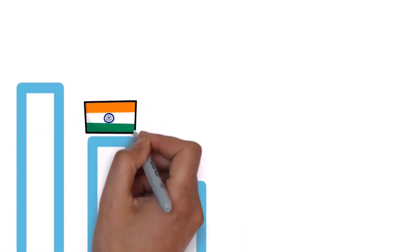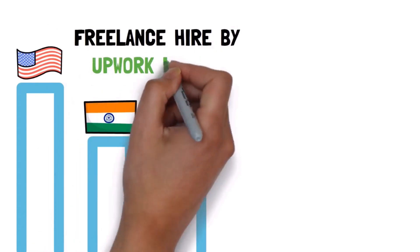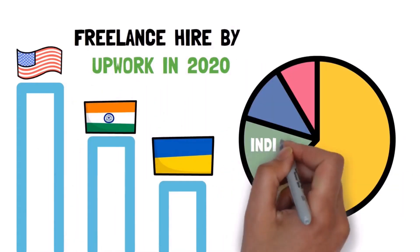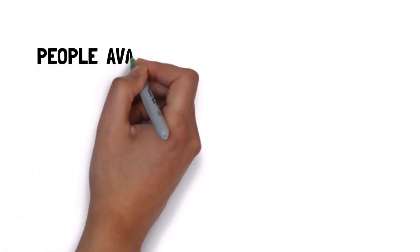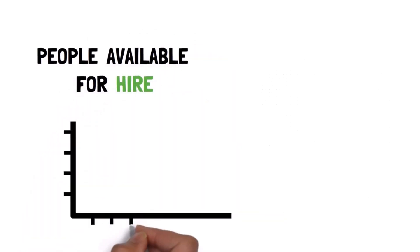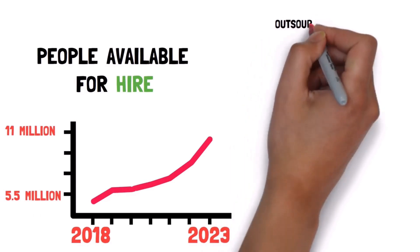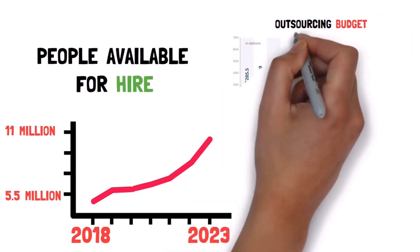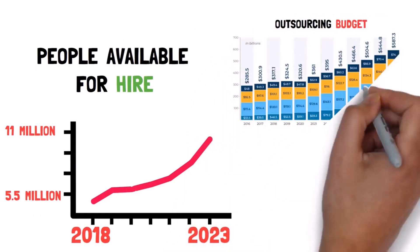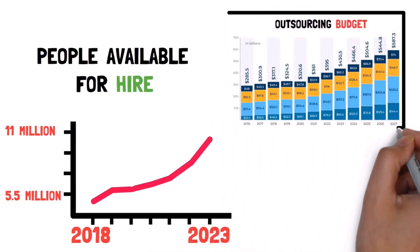Now, India was also voted as the second biggest market for freelance hire by Upwork in 2020, having 12.6% of the market share. Now, the amount of people that are available for hire is estimated to double to more than 11 million people, and that's because the budget for outsourcing is going to go from $180 billion a year, like it is today, to over $500 billion a year by 2030.